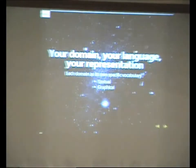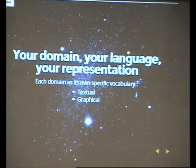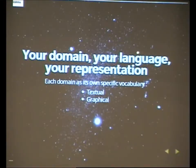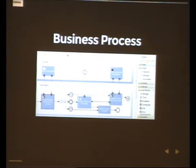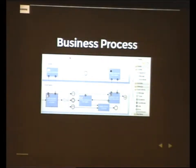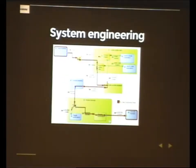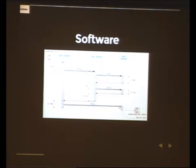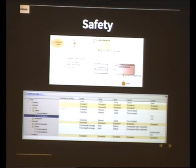Each domain has its specific language and defines its own representations. These representations can take many different textual or graphical forms. Here we can see how a business process could be represented thanks to a BPMN diagram. For system engineering, another vocabulary is defined with its dedicated diagrams. In the software domain, developers use UML to represent software structure and behavior. In the risk analysis domain, people need other kinds of representations like tables or accident scenario diagrams.